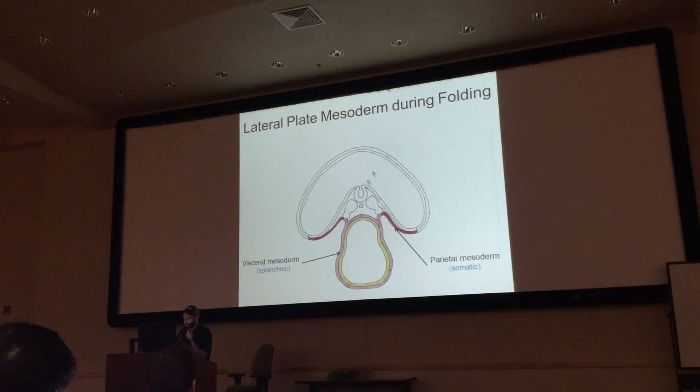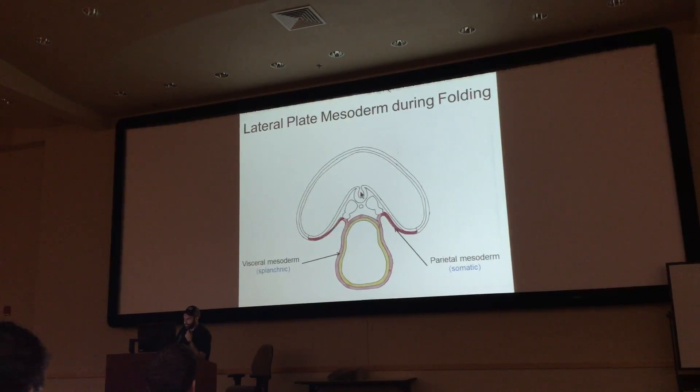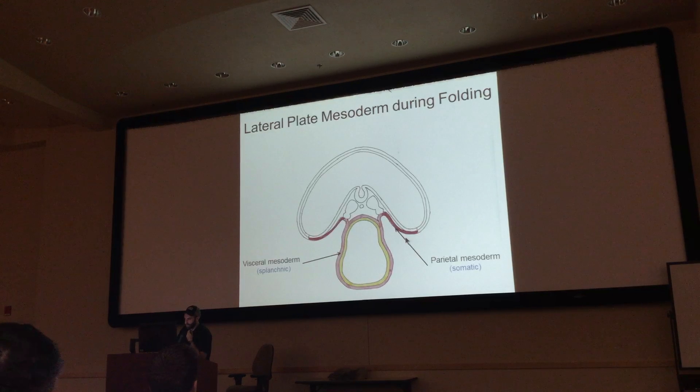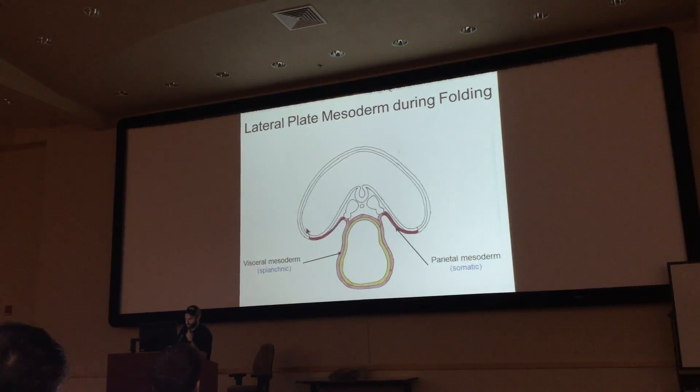This just says that the lateral plate mesoderm splits. Some of it is parietal, which is somatic, and some of it is your visceral, which is your splanchnic.